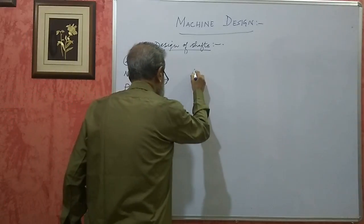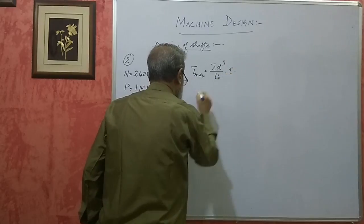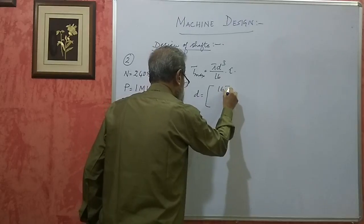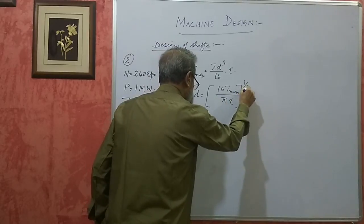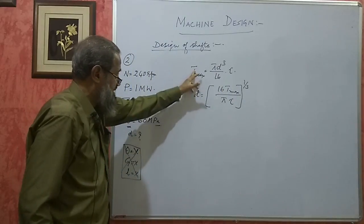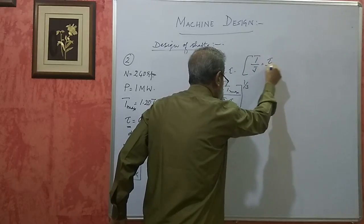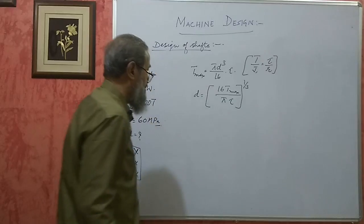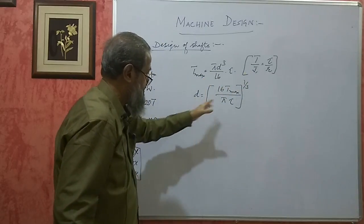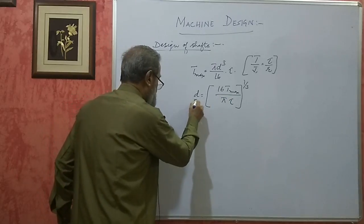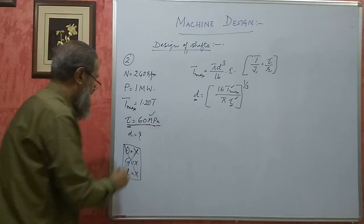The formula for strength basis is: T_max = (π D³/16) × τ, or directly D = (16 T_max / (π τ))^(1/3). To find D, we need T_max. First we find the mean torque using T = 9.55 × P/N × 10⁶ Newton-mm, where P is in kilowatts. The permissible shear stress τ is given as 60 MPa.